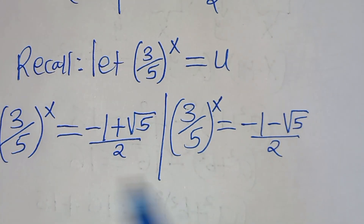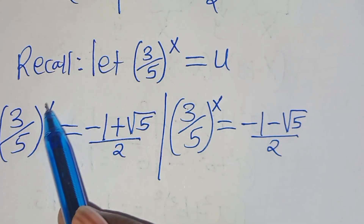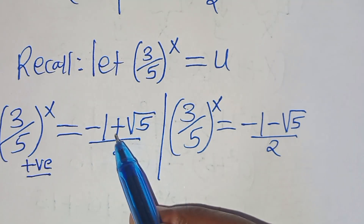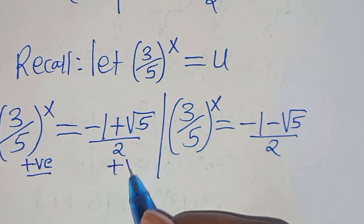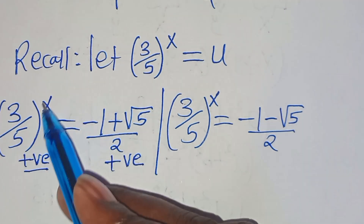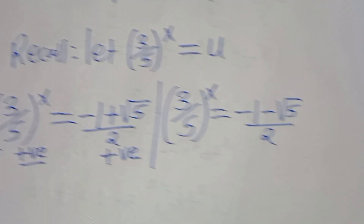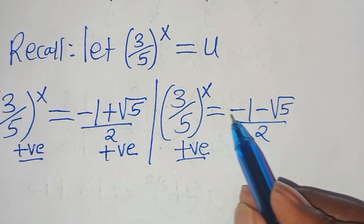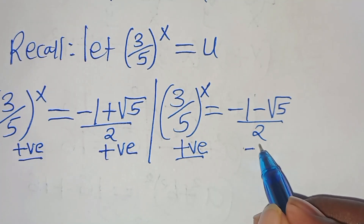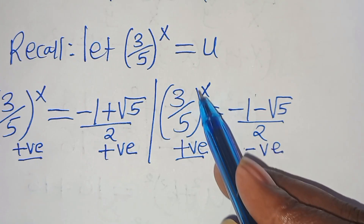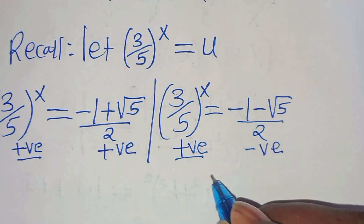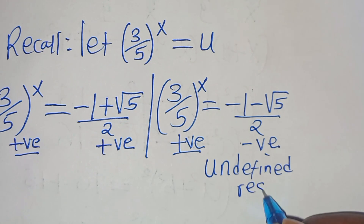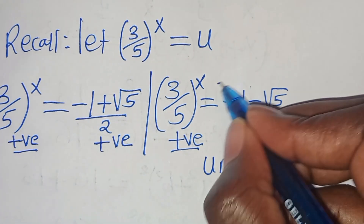Taking these two parts: the first part has (3/5)^x equal to (minus 1 + √5)/2, which is a positive value — so we can proceed to solve for x here. In the second part, (3/5)^x would equal (minus 1 minus √5)/2, which is negative. Since a positive base raised to any power cannot be negative, introducing logarithm gives an undefined result. Therefore the second part is rejected.